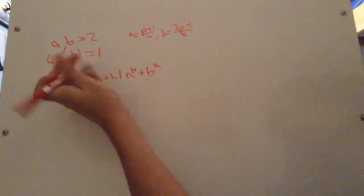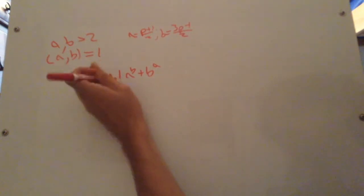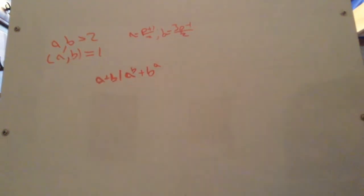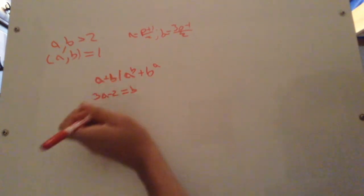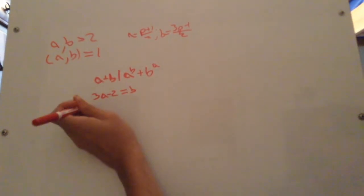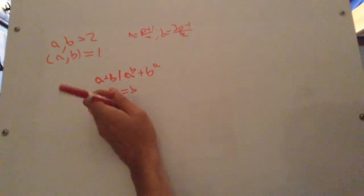So going back to our original statement, the thing we've been trying to prove. First off, we need these to have no common factors. Well, if you look closely, you can notice that b is equal to 3a minus 2.